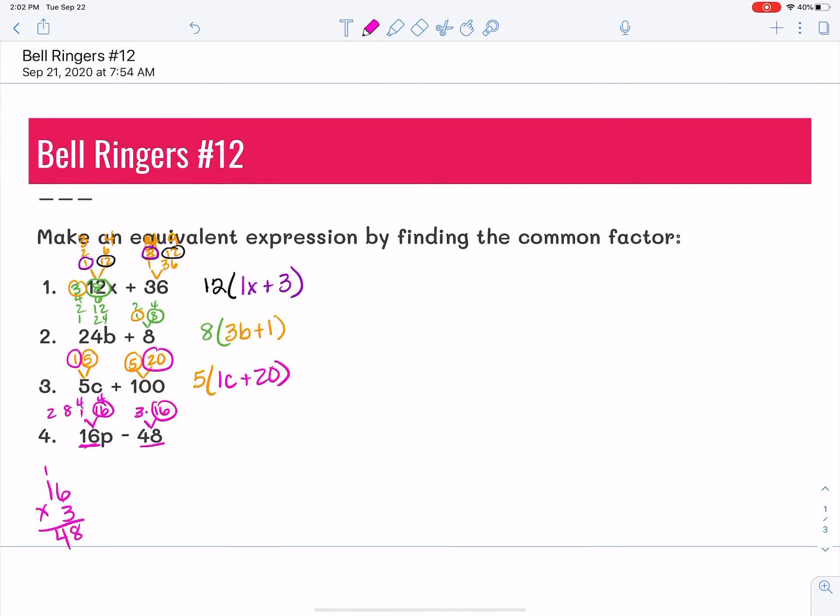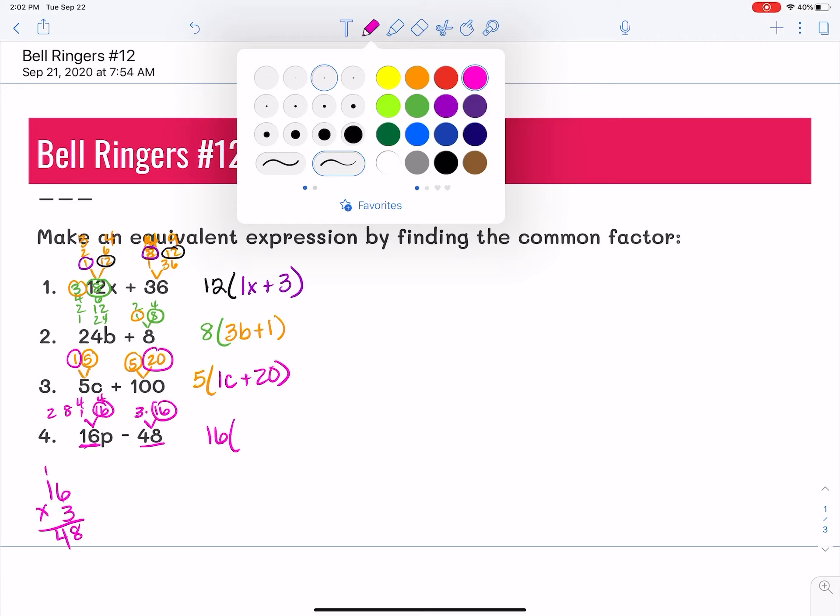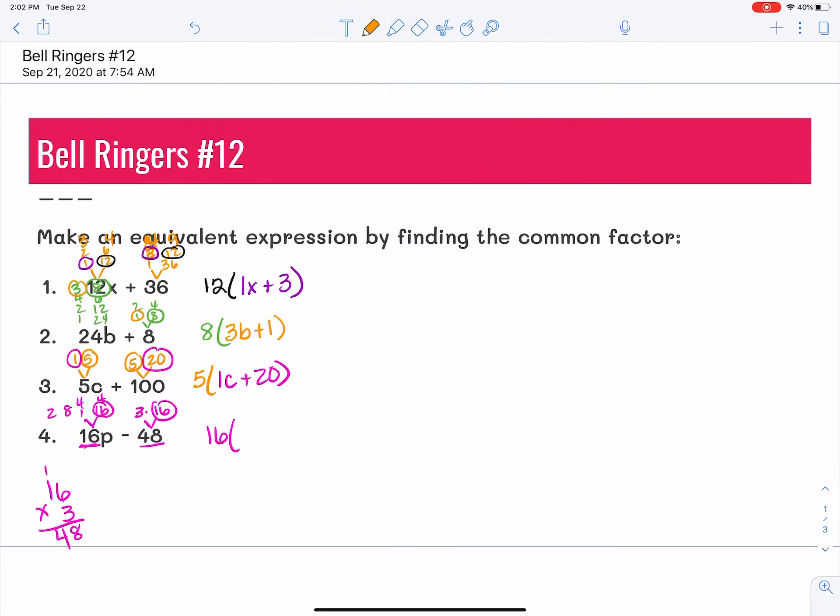So I'm going to pull out that 16, factor it out, and write down the factors that are left. This one would have 1p and negative 3. So there are our final answers for those.